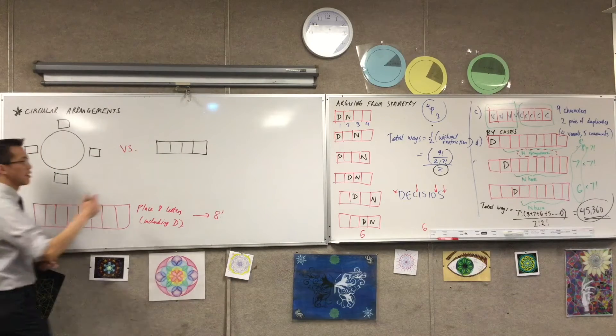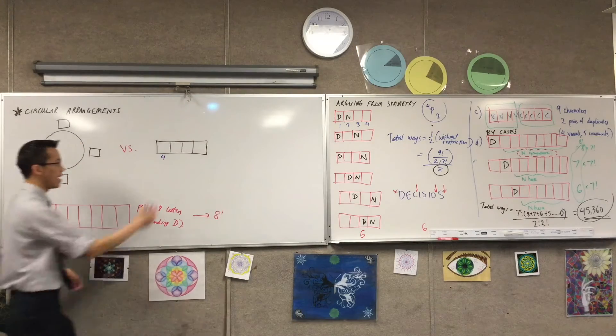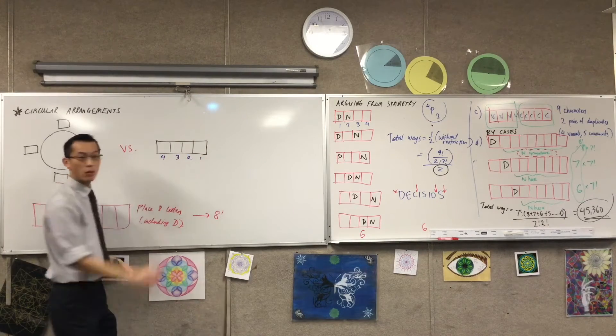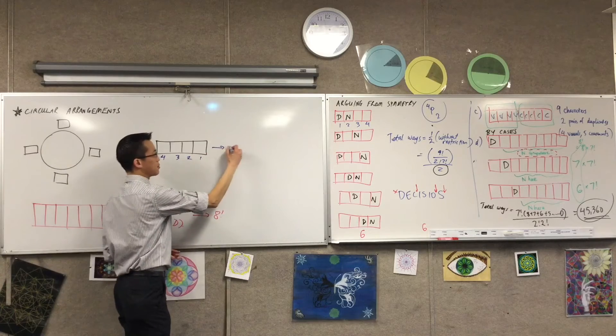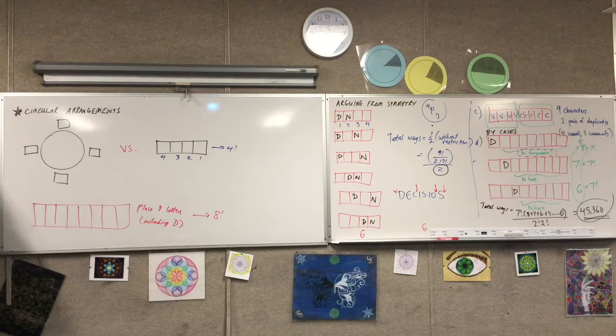So if I do this, we know that there are four ways, four things you can pick for the first spot, and then three, and then two, and then one. So that's why this becomes four factorial, n factorial depending on n spots. No problems.